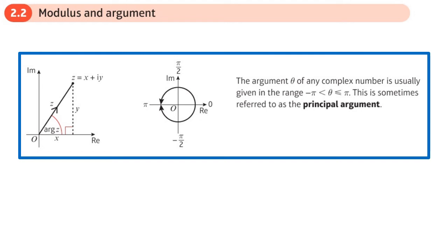This is the second section on modulus and argument of Argand diagrams. In the core one book we look at something called the modulus and argument of a complex number.